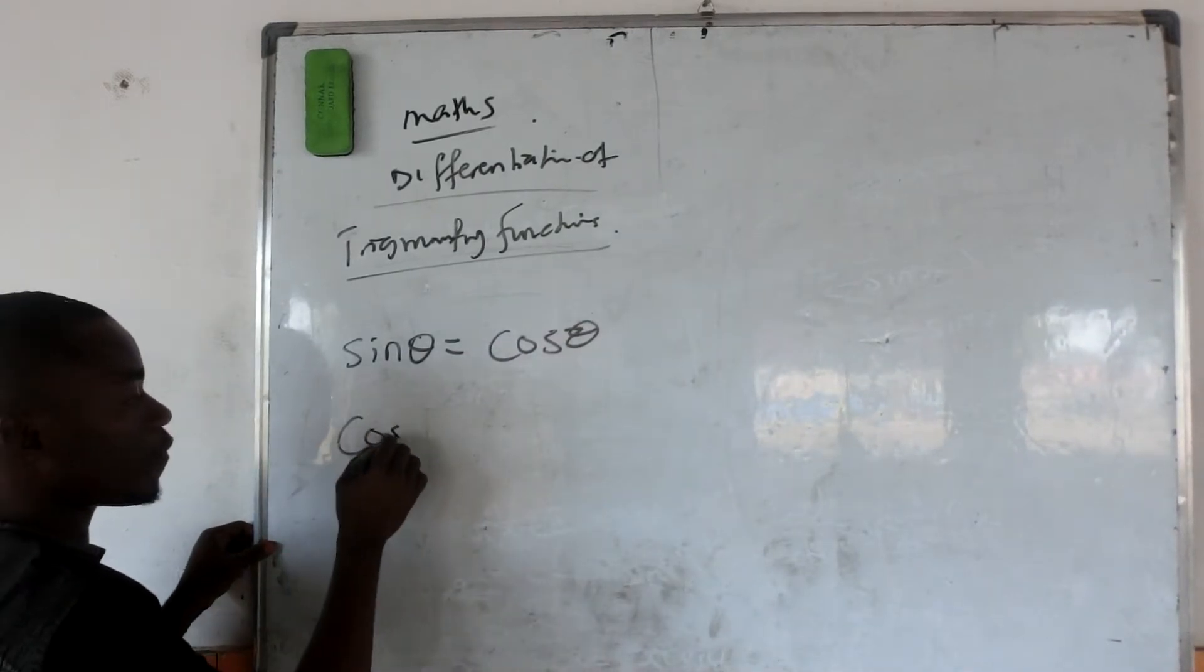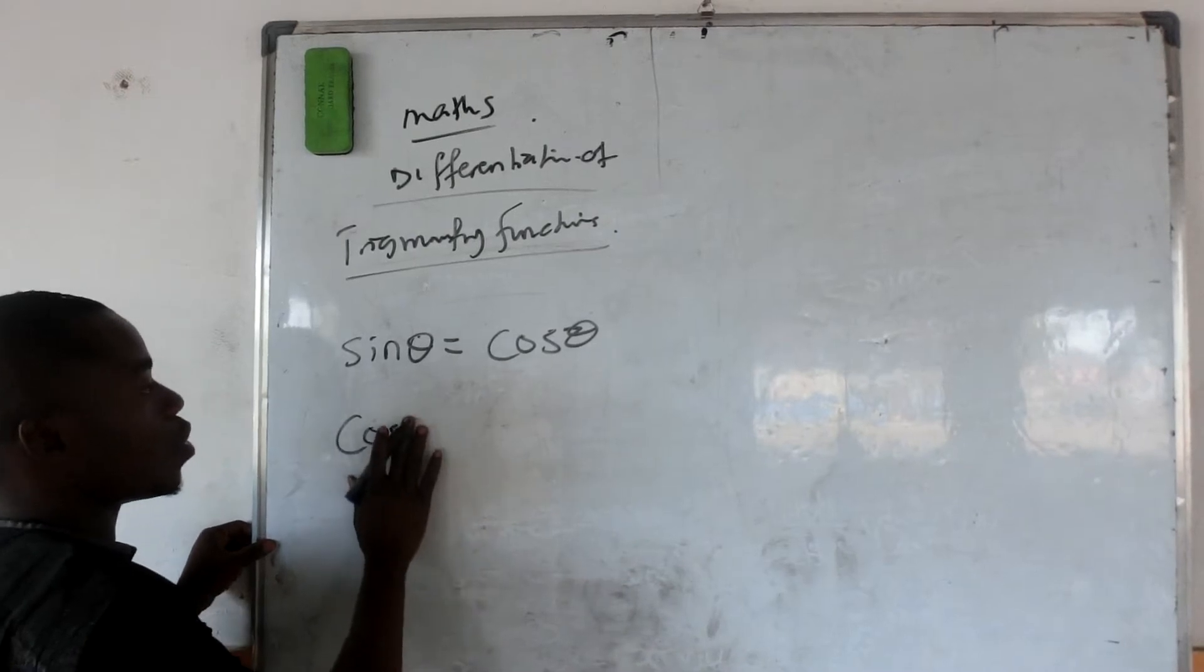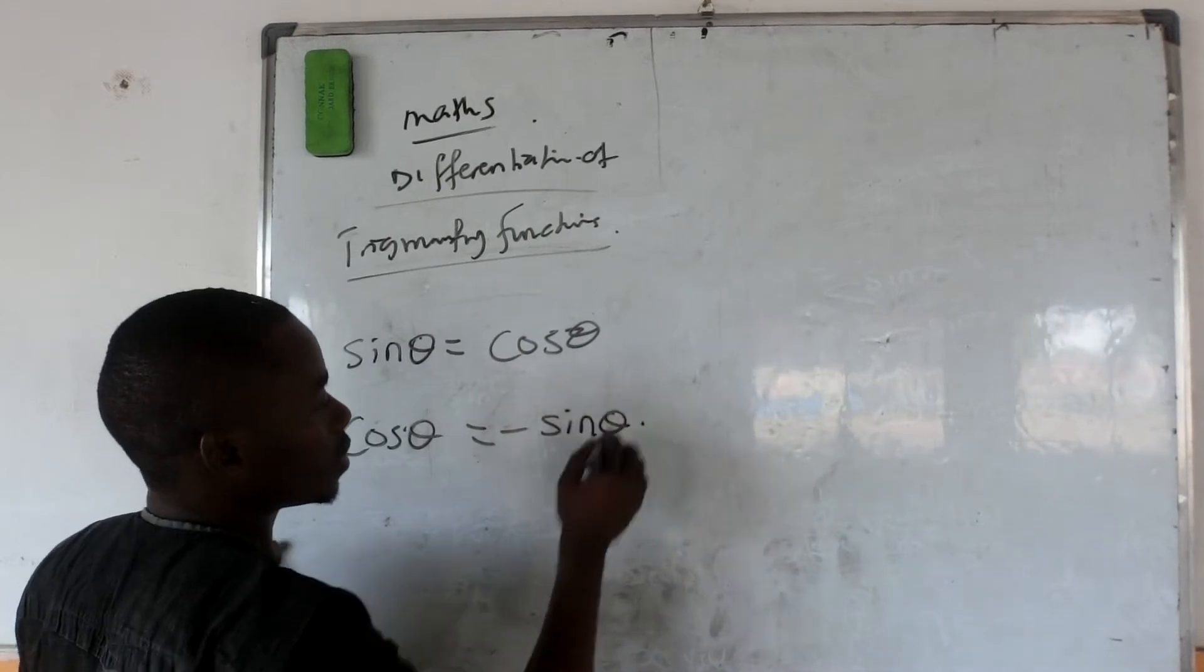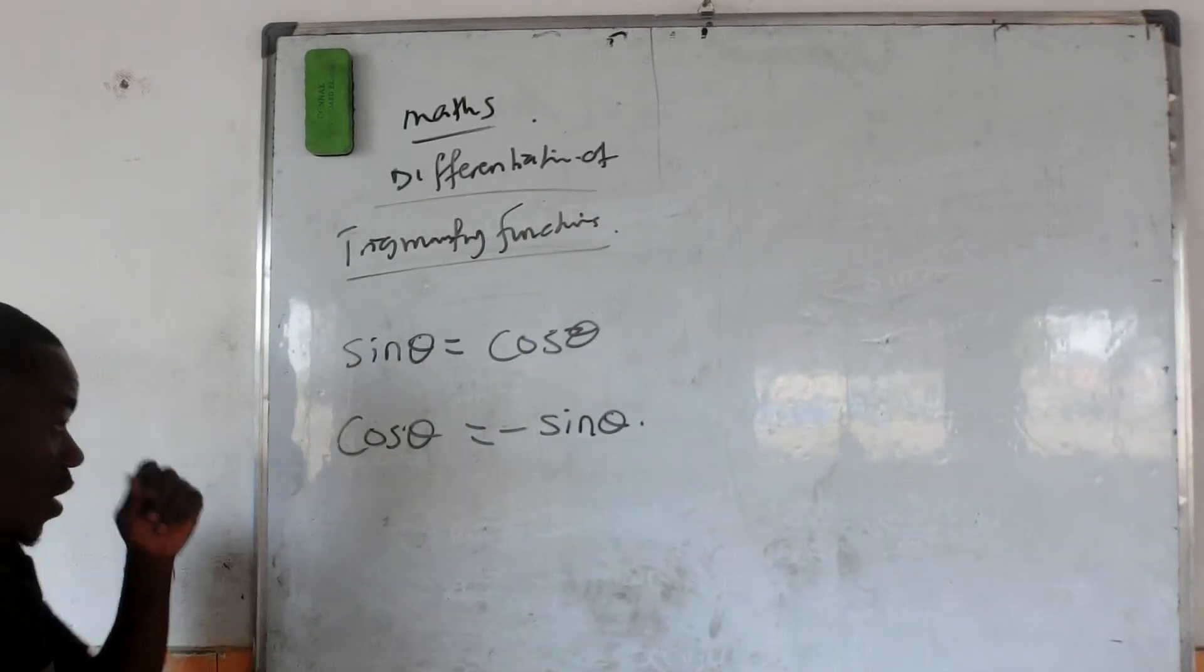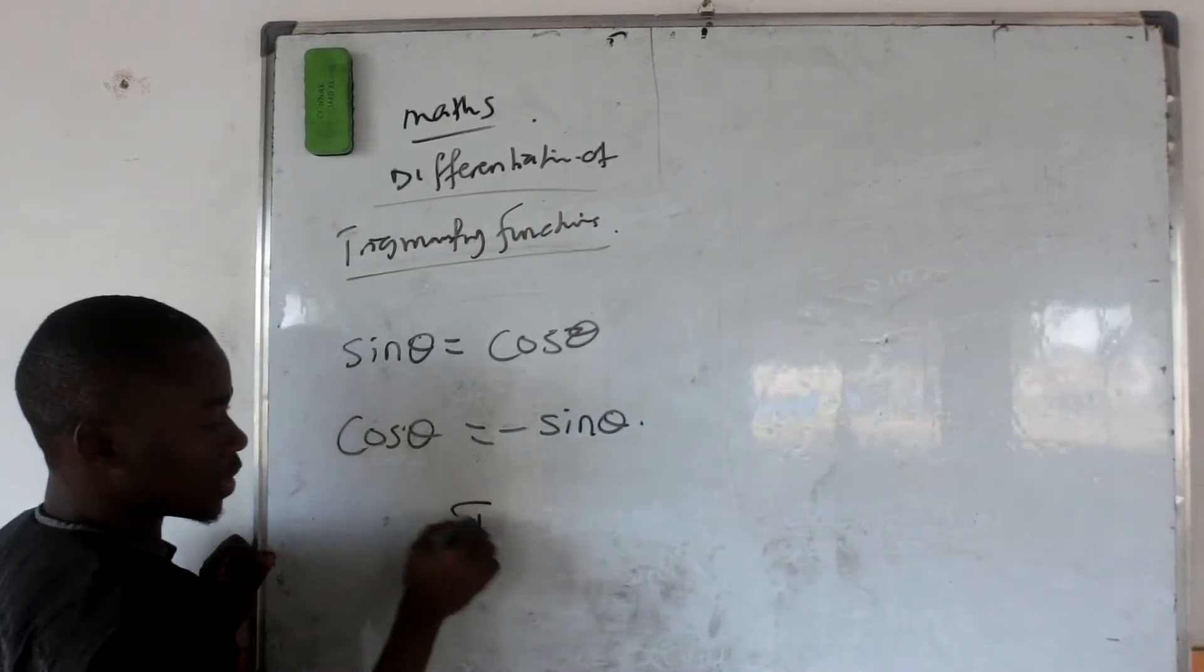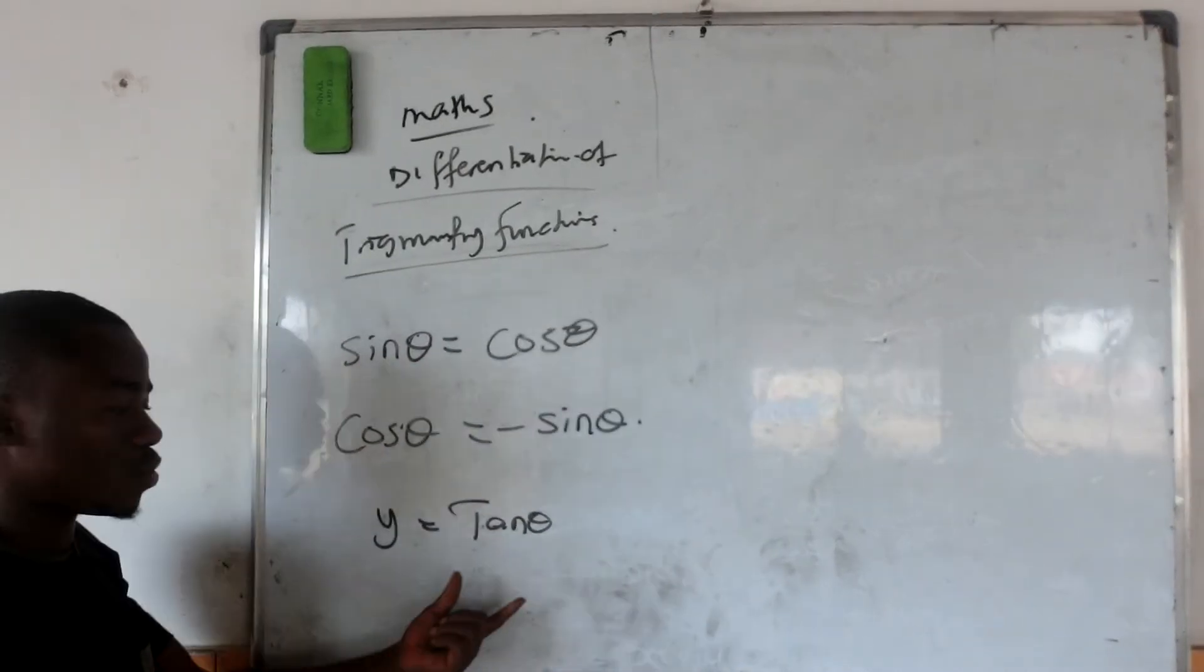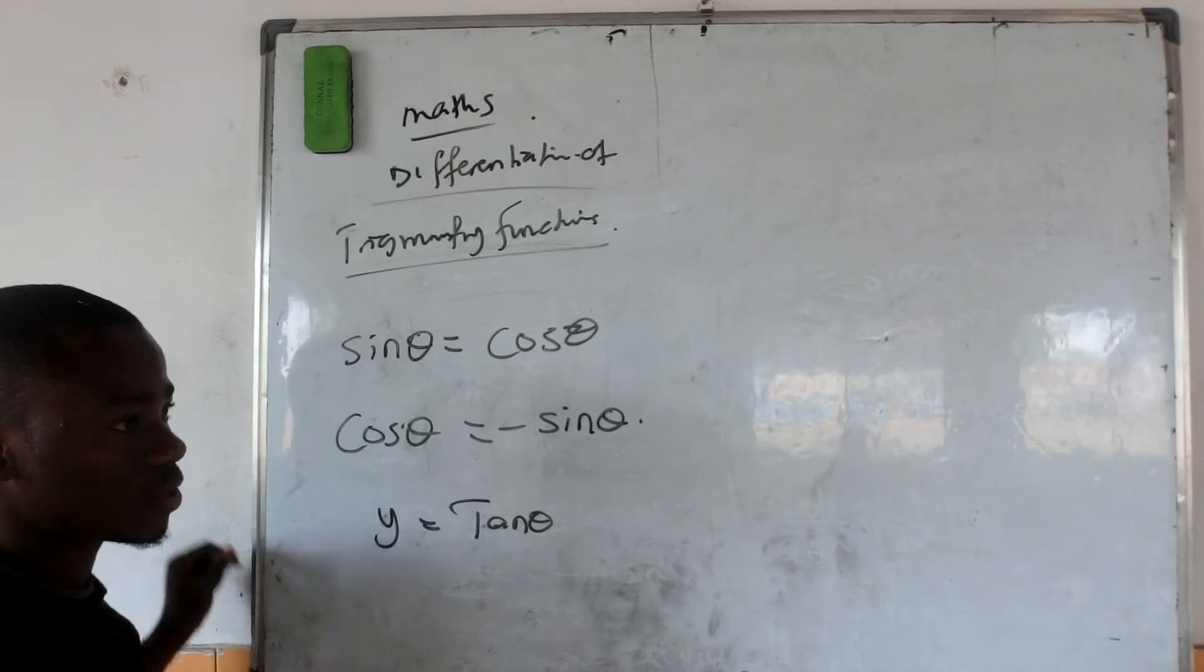And the differentiation of cos theta is equal to minus sin theta. Okay, now let's take an example. You want to differentiate tan theta. Let's have y equal to tan theta. I want to differentiate this.